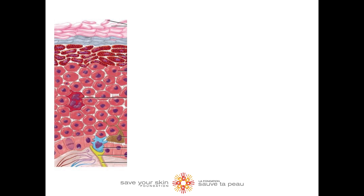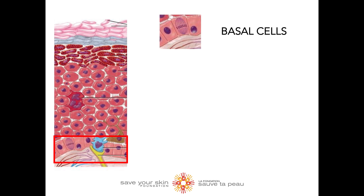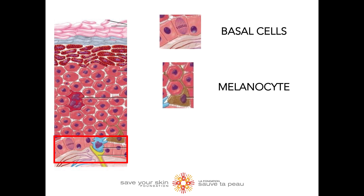First, let's look at the basal layer, which is the bottom layer of the epidermis. In this layer, we have the basal cells and the melanocytes. The melanocytes are responsible for producing melanin, a substance that tries to protect your skin cells from UV radiation. The basal cells play an important role in producing new cells that eventually move into the upper layers.